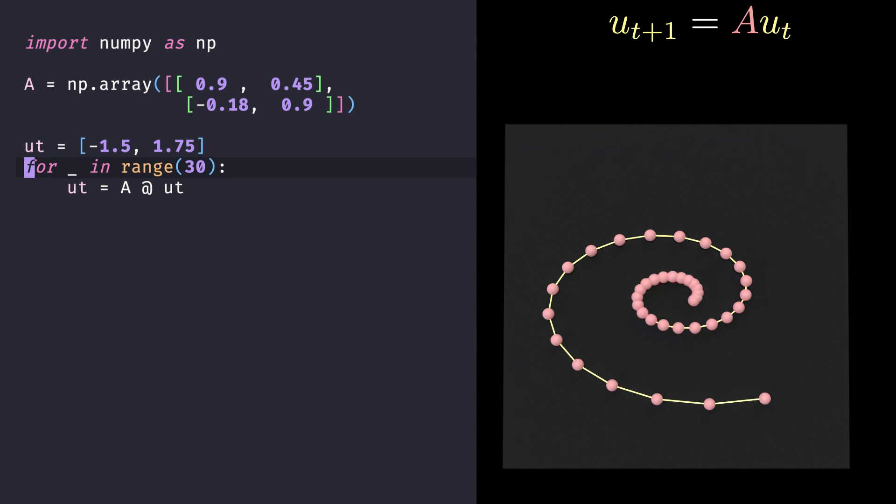Let's now jump to Python and see how we can do this. So we have our matrix A that gives the linear dynamical system ut plus 1 equals A times ut. And just for fun, we can use this code to generate a sample trajectory from this dynamical system. You can see that this particular trajectory converges to 0, but in order to show that all trajectories converge to 0, we need to find a Lyapunov function.